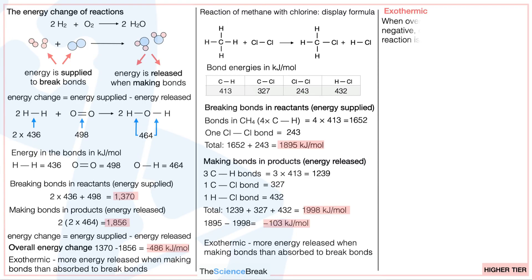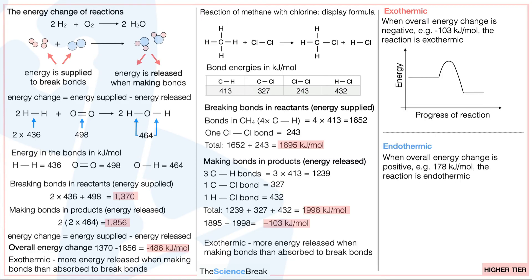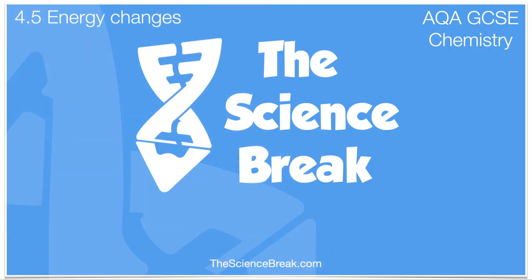In summary: for exothermic reactions, when the overall energy change is negative — for example minus 103 kJ/mol — the reaction is exothermic, and here is the reaction profile for an exothermic reaction. If we have an endothermic reaction, the overall energy change is positive — for example 178 kJ/mol — and here is the reaction profile for an endothermic reaction. That's what you need for the energy change of reactions for combined science. Thank you for watching and I'll see you soon.